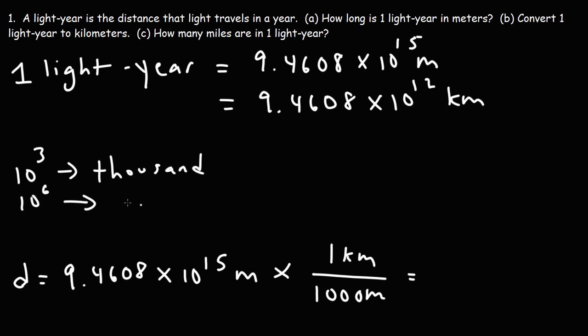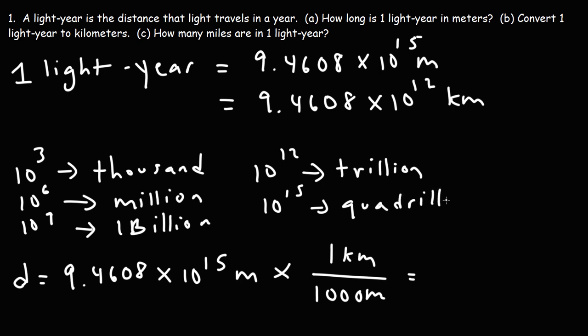10 to the 6th represents a mega or 1 million. 10 to the 9th represents a giga or 1 billion. When you see 10 to the 12th, that's a trillion. And 10 to the 15 is a quadrillion. So a lightyear is 9.46 quadrillion meters. It's also 9.46 trillion kilometers.